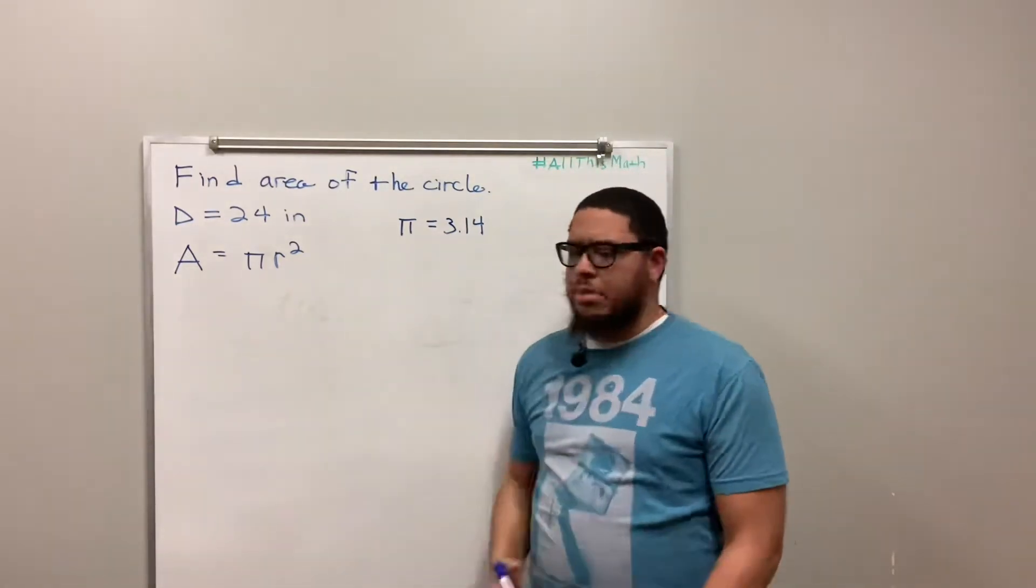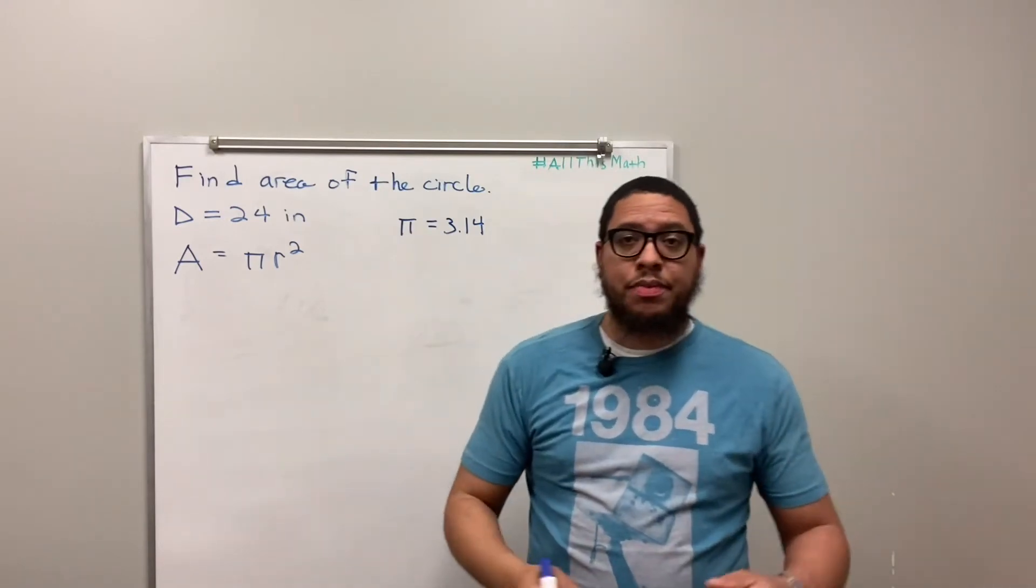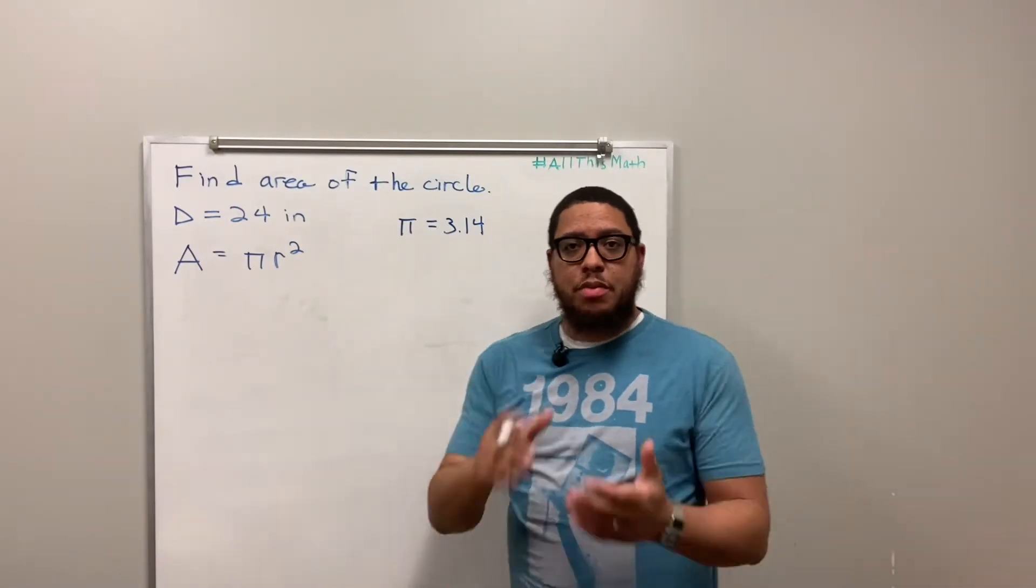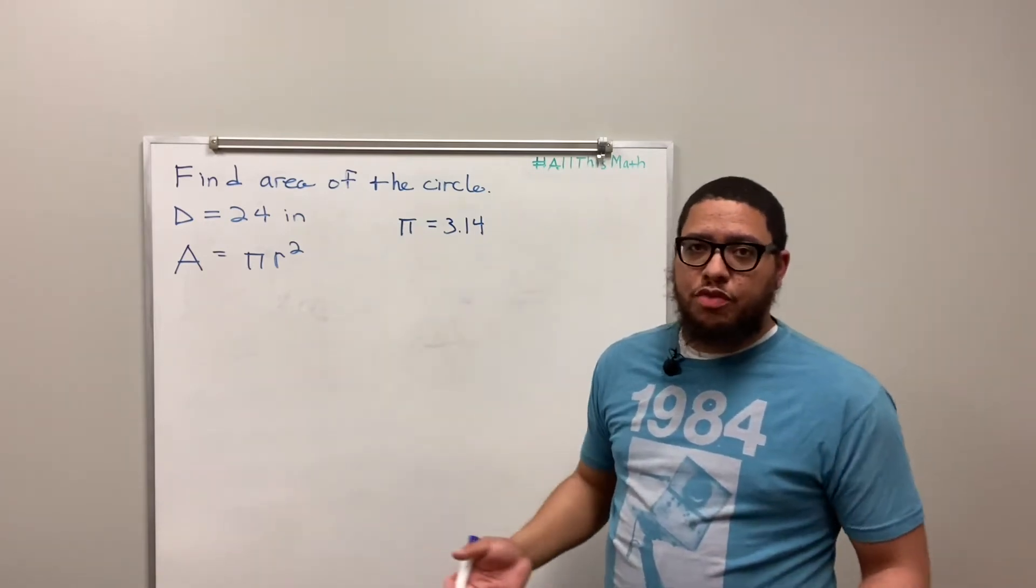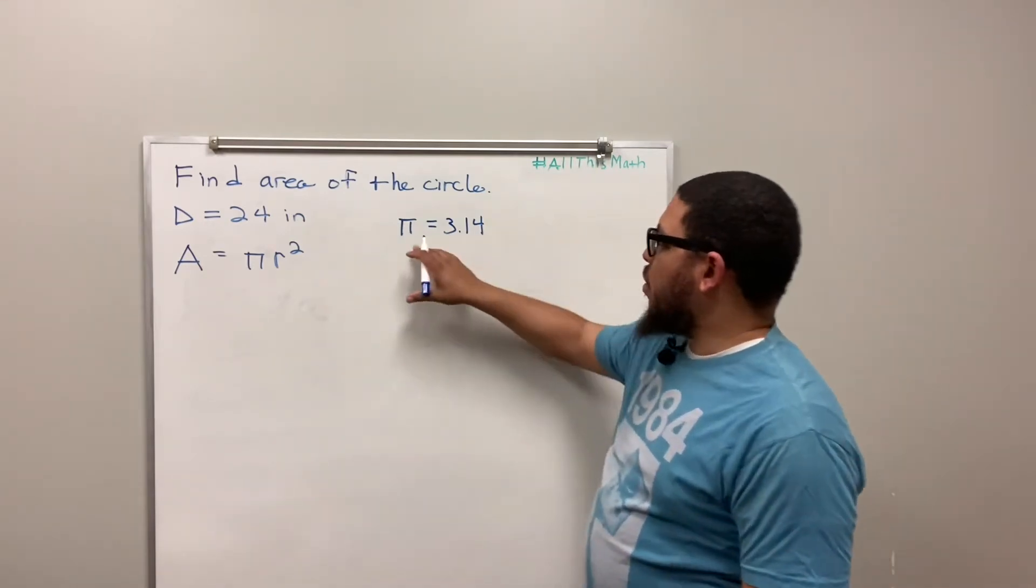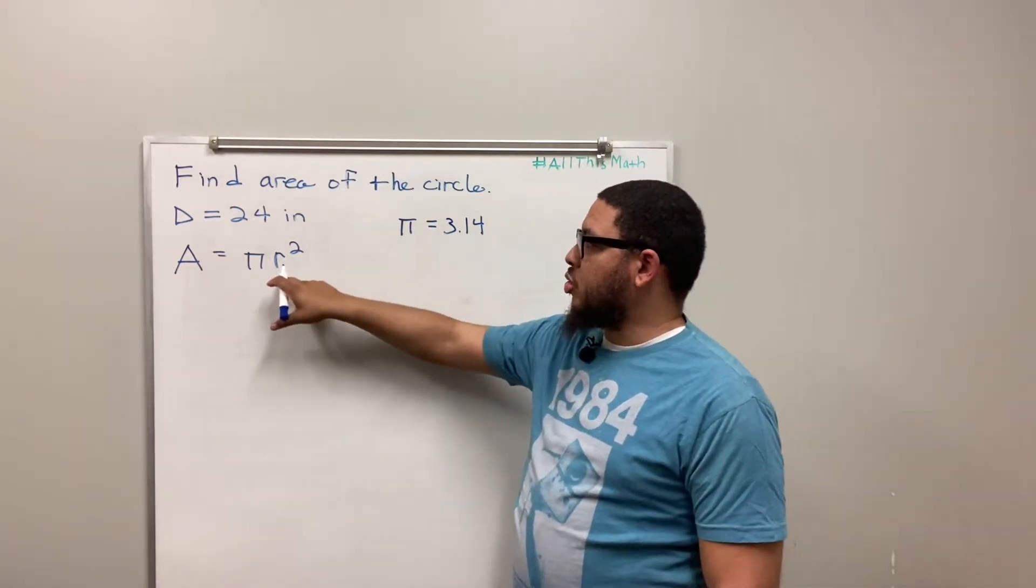Now, if you're using a calculator to do this problem, calculators, most of them, they have a pi button. So you can just hit the pi button and you don't even have to type in 3.14. Now, pi is 3.14.